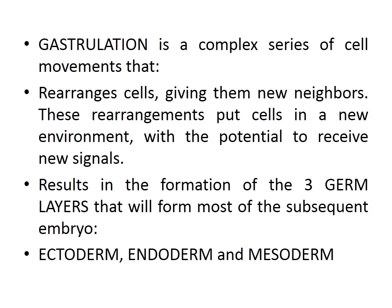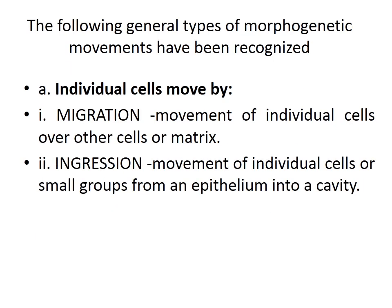The three germ layers — ectoderm, endoderm, and mesoderm — are formed as blastomeres rearrange themselves into ectodermal, endodermal, and mesodermal cells. Morphogenetic movements are the characteristic feature of gastrulation, and this is an important topic that commonly appears as an essay question.